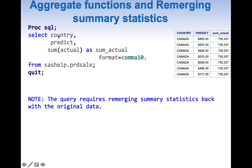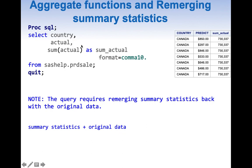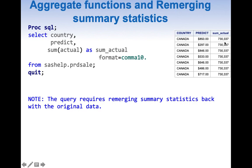Whenever we SELECT columns which do not have an aggregate function, it will return all rows of those columns. An aggregate function on a column without GROUP BY gives a single value which is then repeated. So in our result we have country, predict, and sum_actual column which has a repeated value. Whenever we run this kind of query, we get a note: the query requires re-merging summary statistics back with the original data.